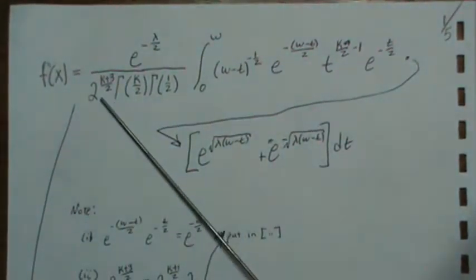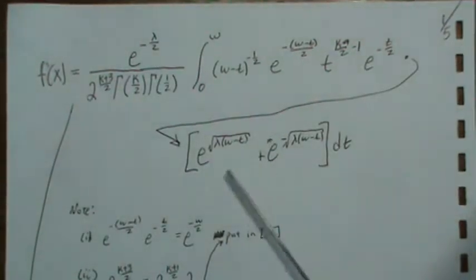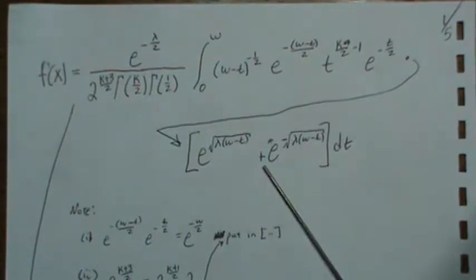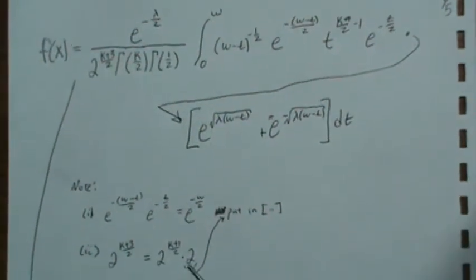One of these 2's I need to take and divide it here because then this is the hyperbolic cosine function and so that's what I do here.